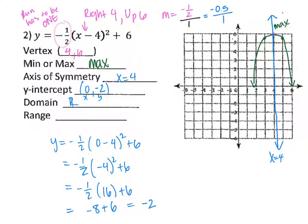The domain is all real numbers because there's an arrow pointing left and right. For the range: notice this parabola points down with an arrow, meaning it goes from negative infinity. The highest point on this parabola is that peak at y equals 6. So the range is negative infinity to 6, with a bracket at 6.